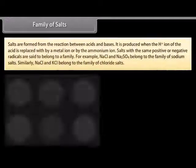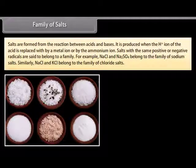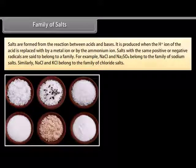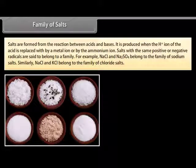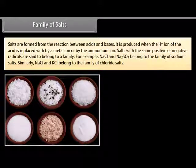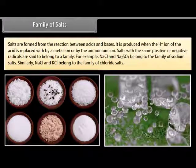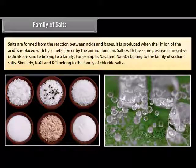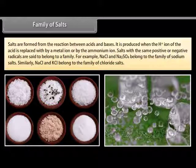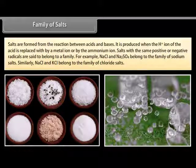Salts are formed from the reaction between acids and bases. A salt is produced when the H⁺ ion of the acid is replaced by a metal ion, the aluminum ion, or the ammonium ion. Salts with the same positive or negative radicals are said to belong to a family. For example, NaCl and Na2SO4 belong to the family of sodium salts; similarly, NaCl and KCl belong to the family of chloride salts.